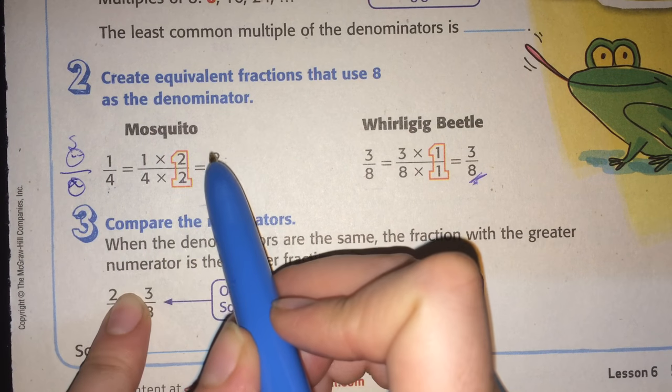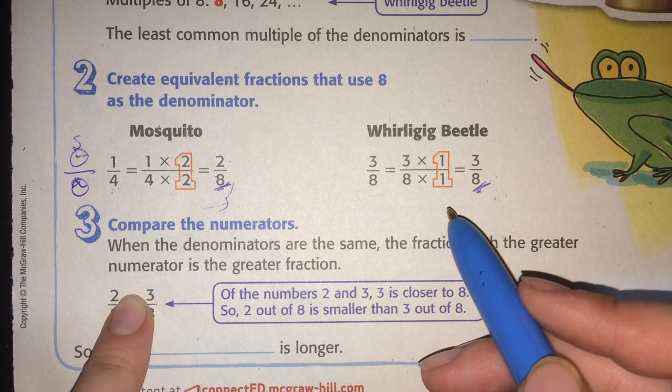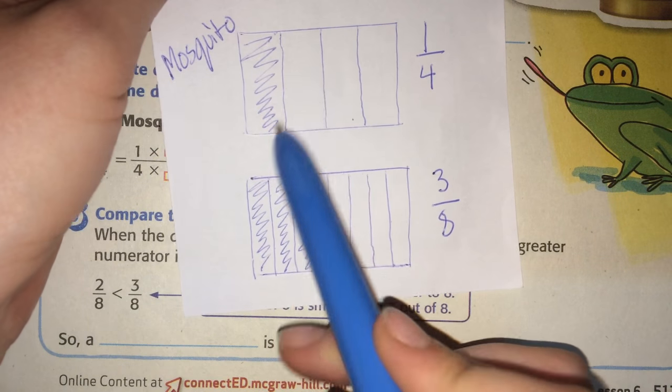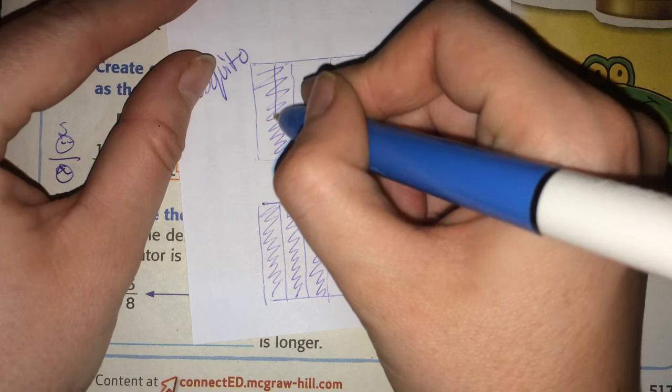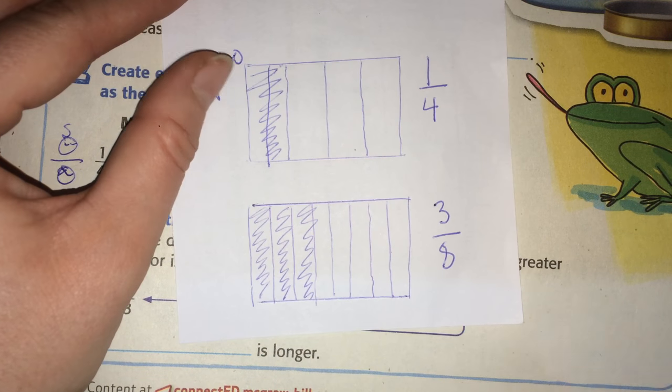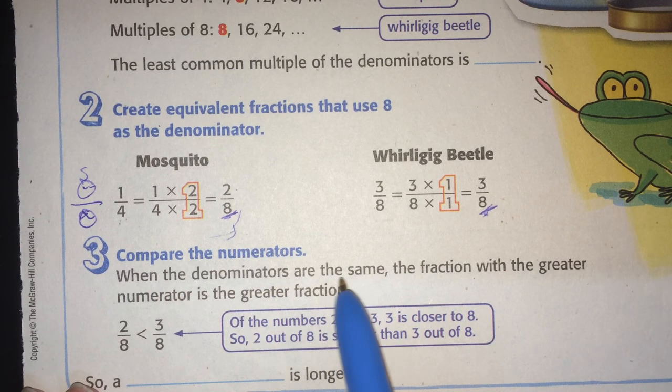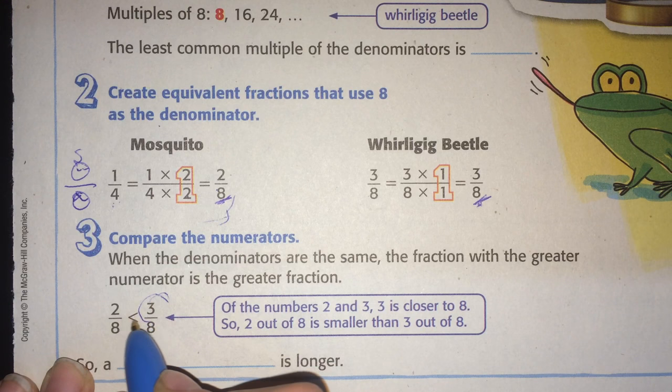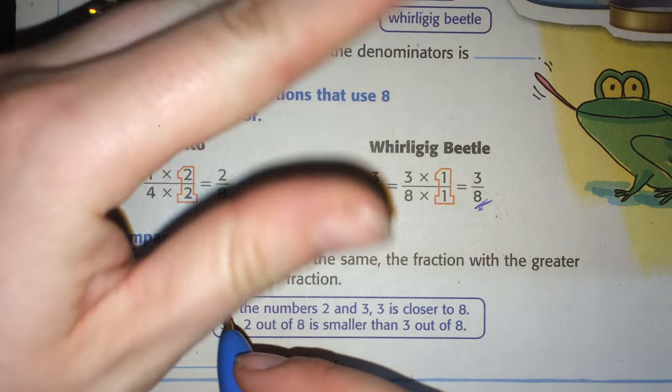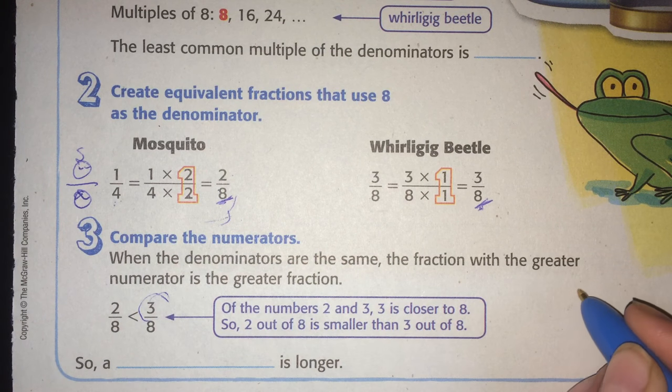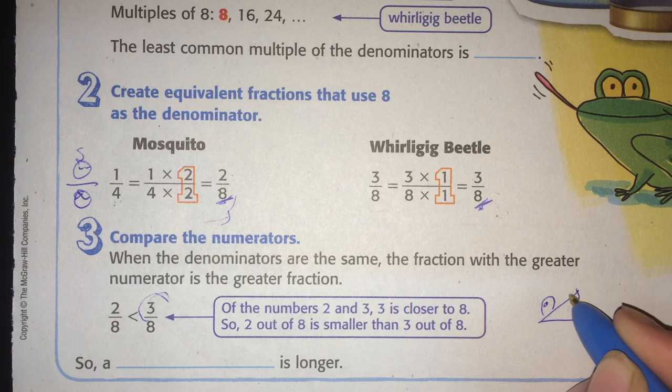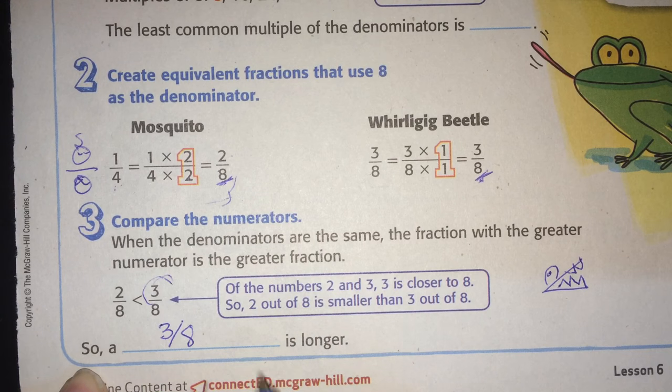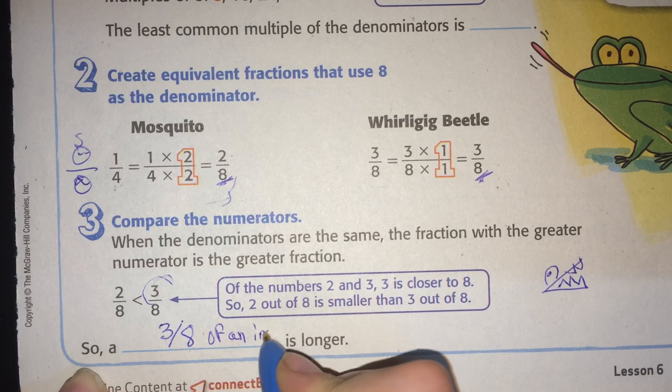So now we compare. Which one is bigger? Two-eighths or three-eighths? Well, three is bigger than two, right? If you have something that's only divided, we could divide this one in two, right? Would you rather have two or three? Right? This one's going to be bigger. When the denominators are the same, the fraction with the greater number is the greater fraction. So this is the bigger fraction. And this is our symbol. Remember, we put the triangle towards the big one, right? The big mouth. Like this. Imagine it's like a crocodile. And he wants to eat the big pieces. So this is bigger.